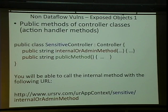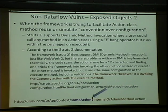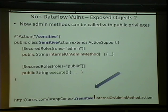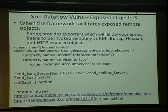Exposed objects in these frameworks: if you make them public, they're callable via URL. As long as you know what to put in the URL, you can call those public methods — convention over configuration. We went over the bang operator. In Struts 2, the bang executes with the privileges of execute, not the method being called. So if execute is a public method and internal-admin is an admin method, you can use the bang to get around your authorization.